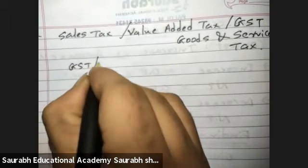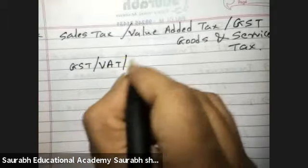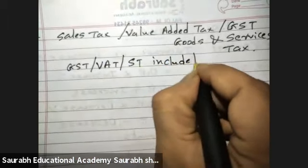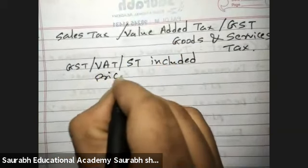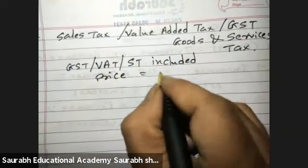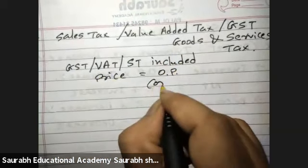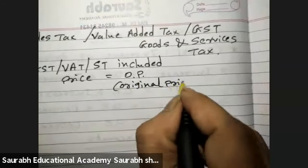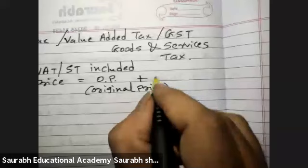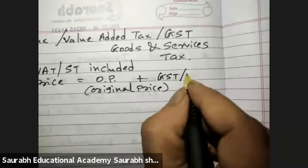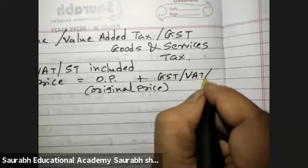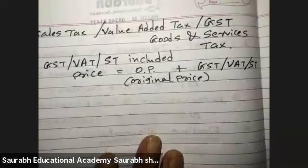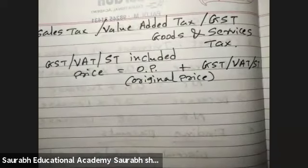GST, VAT, or Sales Tax included price is equals to OP (that is Original Price) plus GST, VAT, or ST — it is to be added.